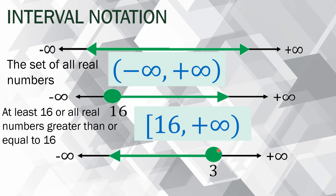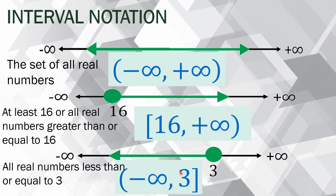On the third example, we see positive 3, and the green behavior moves to the left infinitely. Since the circle is shaded on 3, it means 3 is part of it — that's why we use a half bracket, meaning 3 is included. So we say all real numbers less than or equal to 3. As you move to the left the numbers are decreasing, that's why less than. And equal to 3 because that point is shaded, so 3 is part of it.